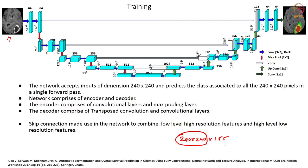This is a typical UNET architecture: it takes a 240 by 240 input and predicts the class of all pixels. It has an encoder-decoder architecture with a downsampling path and an upsampling path, connected by skip connections from the downsampling to the upsampling layers to improve spatial resolution. Skip connections combine low and high level features in the network. This was one of the entries to the competition.